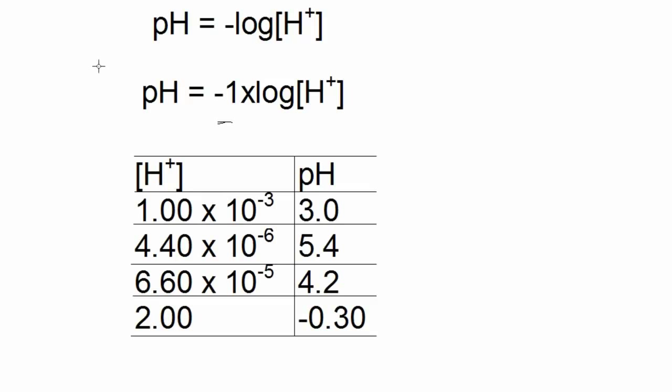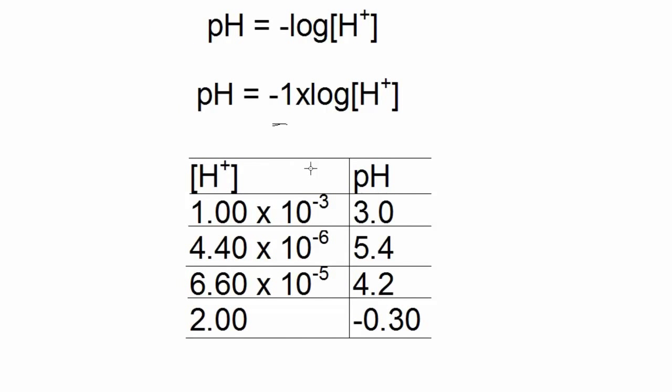Here's a table that shows some hydrogen ion concentration values and some pH values. Like the pKa, you can see that hydrogen ion values with negative exponents result in positive pH values.